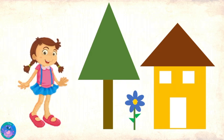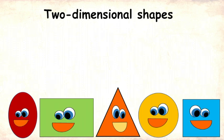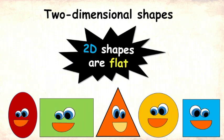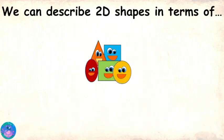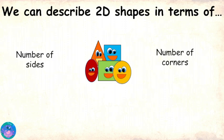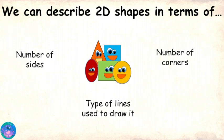Hi friends! I am Zoe and today we are going to meet some two-dimensional shapes. Two-dimensional shapes or 2D shapes are shapes that are flat. We can describe 2D shapes in terms of number of sides, number of corners and types of lines used to draw them. This will help us recognize these shapes when we meet them again.